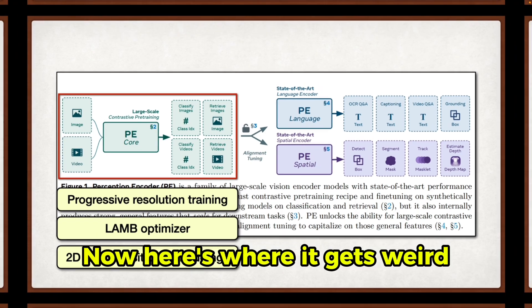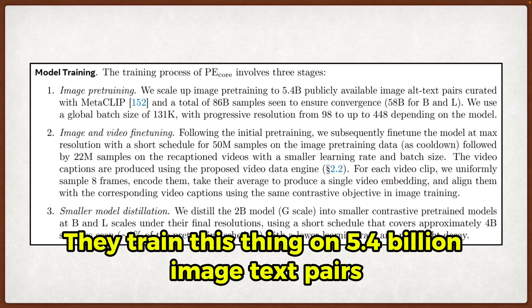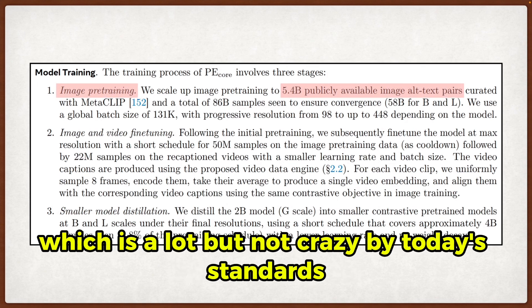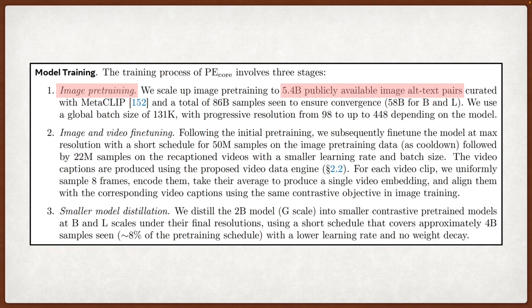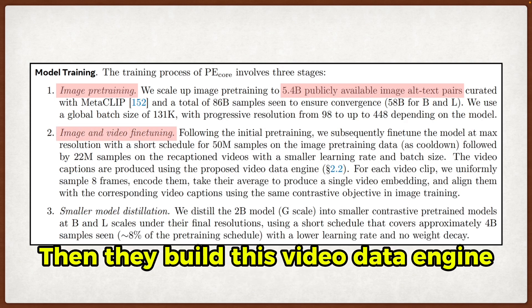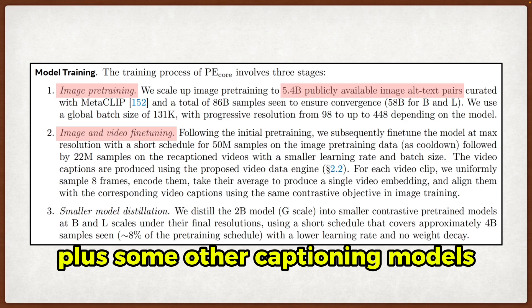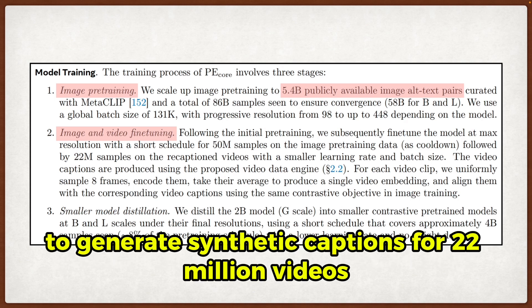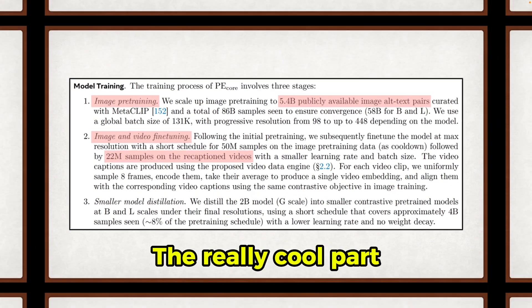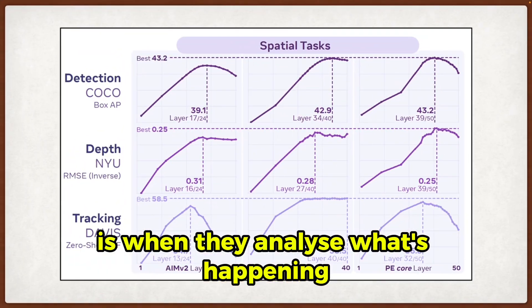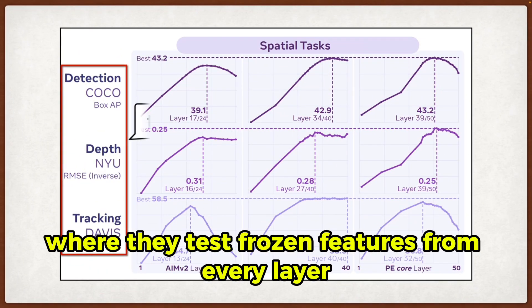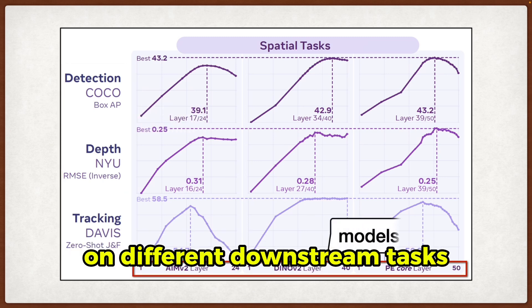They train this on 5.4 billion image-text pairs, which is a lot but not crazy by today's standards. Then they build this video data engine, where they use their own model plus some other captioning models to generate synthetic captions for 22 million videos. The really cool part is when they analyze what's happening inside the network — they test frozen features from every layer on different downstream tasks.